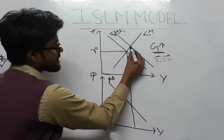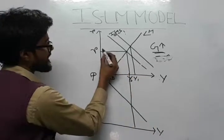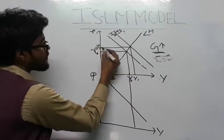As a result, the income increases from Y0 to Y1 level, and the interest rate increases from R0 to R1.